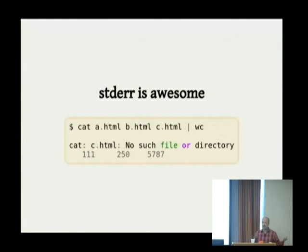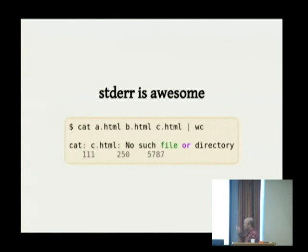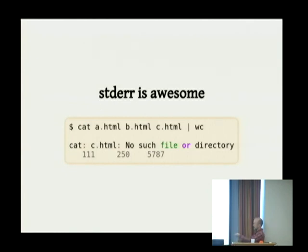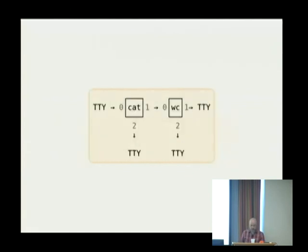Here I have a cat command that returns an error. The cat command attempts to read three files and only succeeds on two of them, then it's made the input to the word count command, which tells us the number of lines, words, and characters in a.html and b.html. The error printed by cat when it found its third argument couldn't be opened appeared on our screen, rather than causing wc to see one extra line, half a dozen extra words, and maybe 60 extra characters.